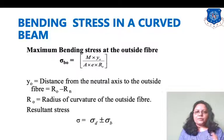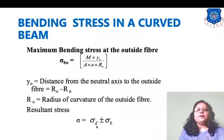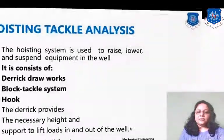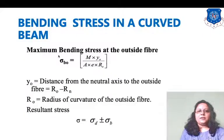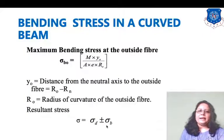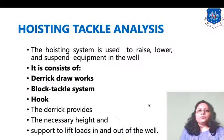The resultant stress is equal to sigma d plus or minus sigma b. By substituting all the individual stress equations into this expression, we obtain the final resultant stress in the curved beam crane hook design.